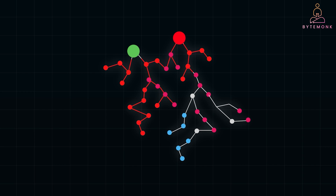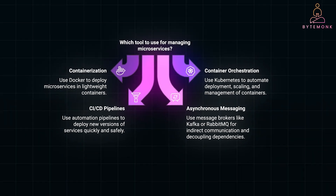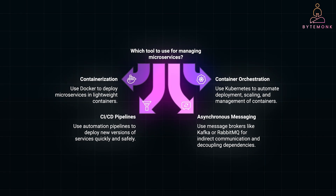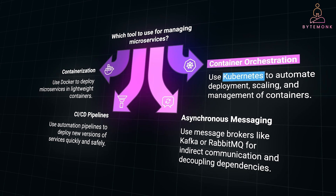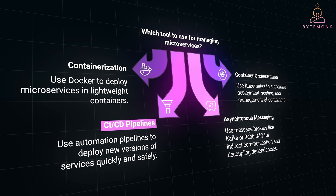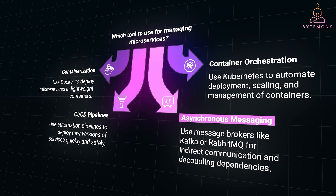To manage the complexity of microservices, engineers have created specialized tools. Microservices are now often deployed in lightweight containers using tools like Docker. Kubernetes automates the deployment, scaling, and management of containers. Automation pipelines help deploy new versions of services quickly and safely. And message brokers like Kafka or RabbitMQ allow microservices to communicate indirectly and decouple their dependencies.